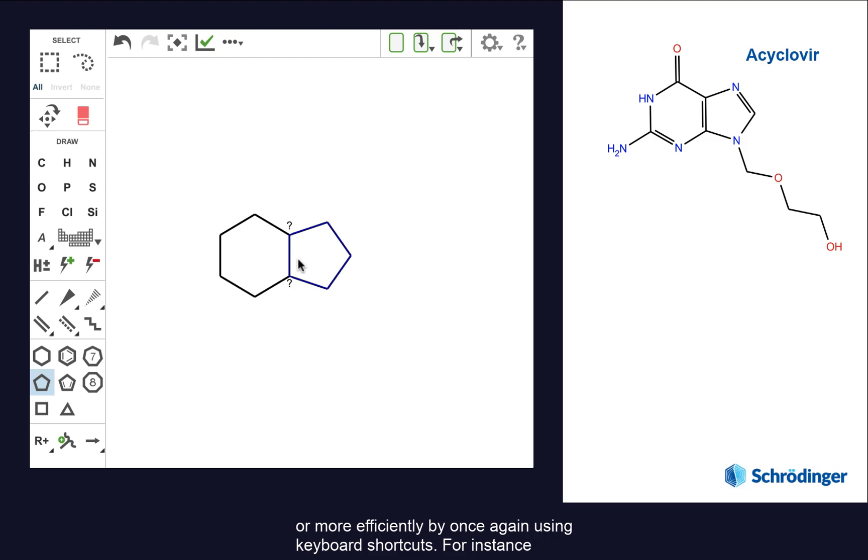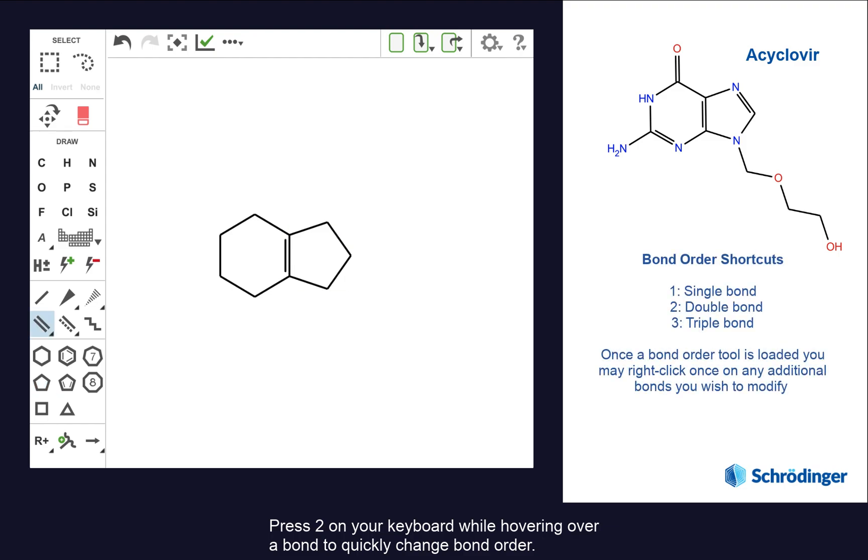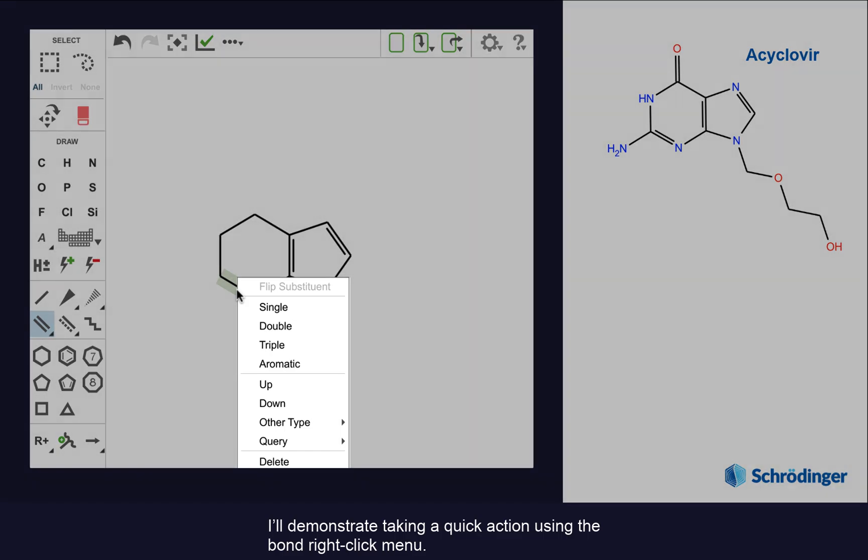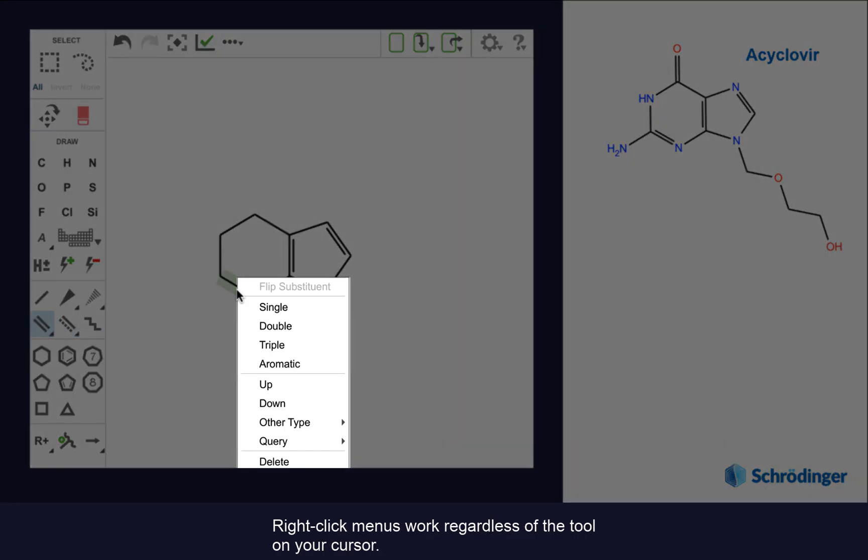For instance, press 2 on your keyboard when hovering over a bond to quickly change bond order. This also works for 1 or 3. For this last double bond, I'll demonstrate taking a quick action using the bond right-click menu. Right-click menus work regardless of the tool on your cursor.